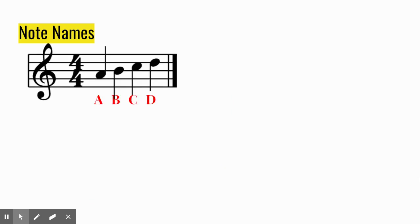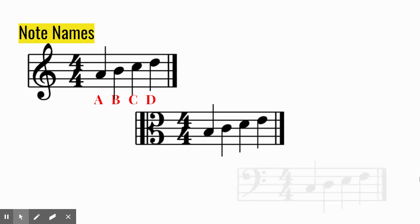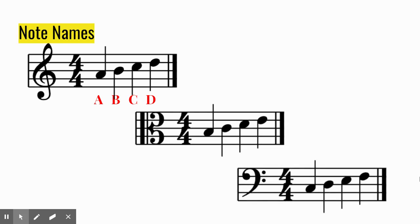Let's look at some notes. These are called A, B, C, D. Notice how the notes alternate between space, line, space, line as they go up. These other examples have notes that look the same as the first example, but the note names are different.